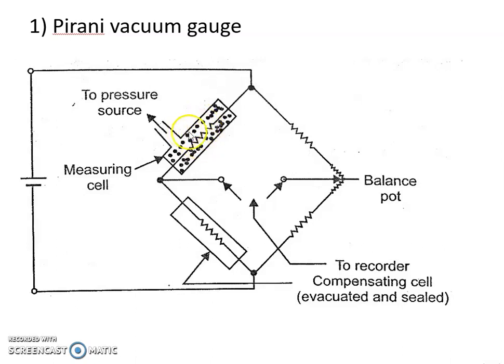When there is a change in pressure, the temperature of this filament changes, and because of the change in temperature, the resistance of this filament changes. A compensating cell is also employed to minimize variation caused by ambient temperature changes.